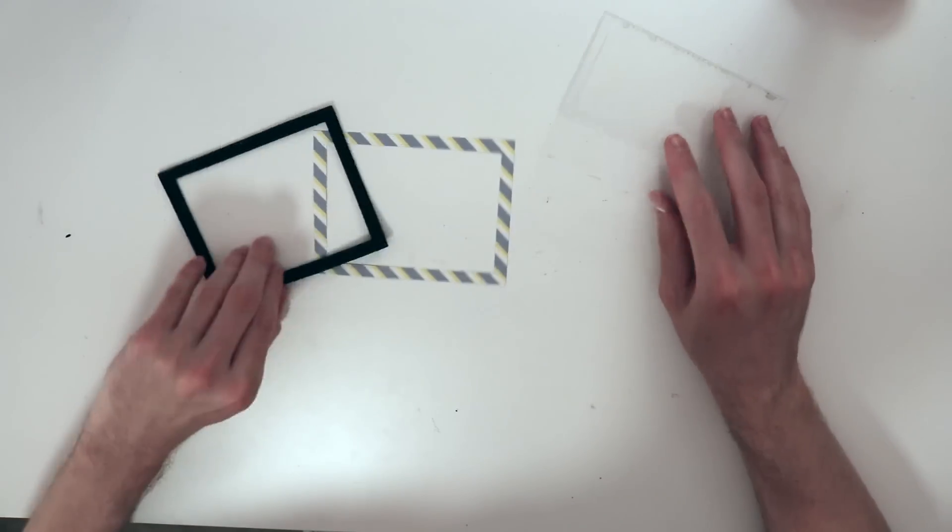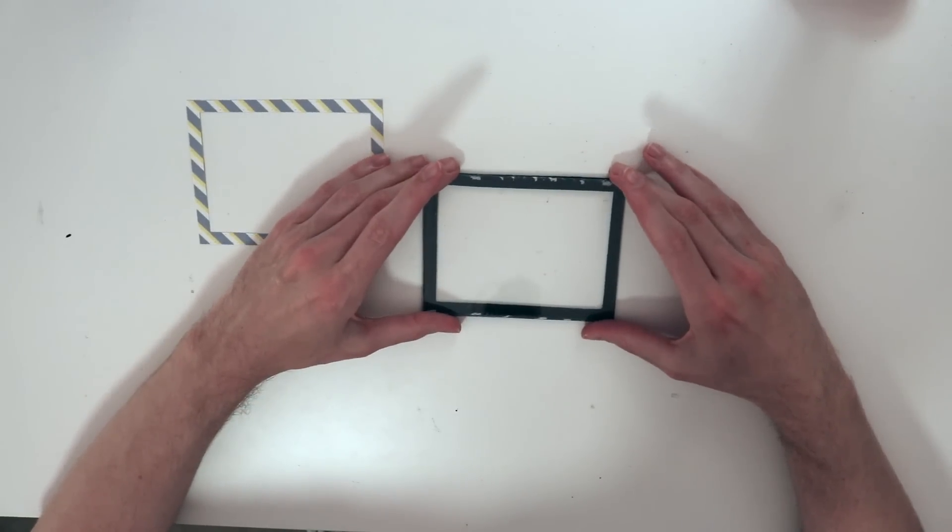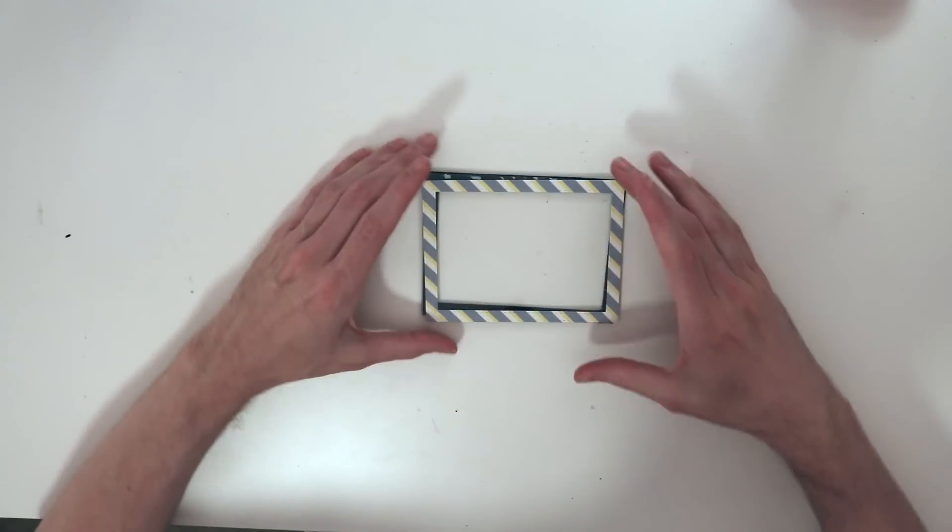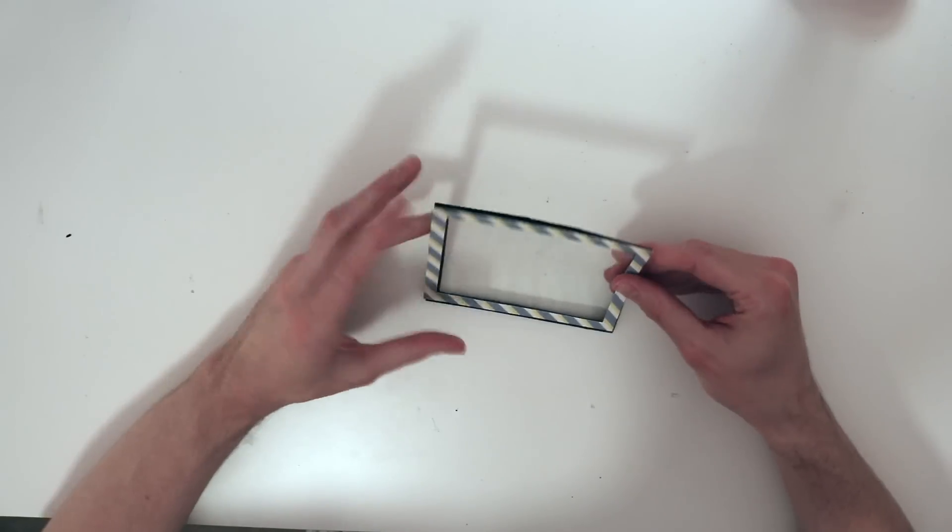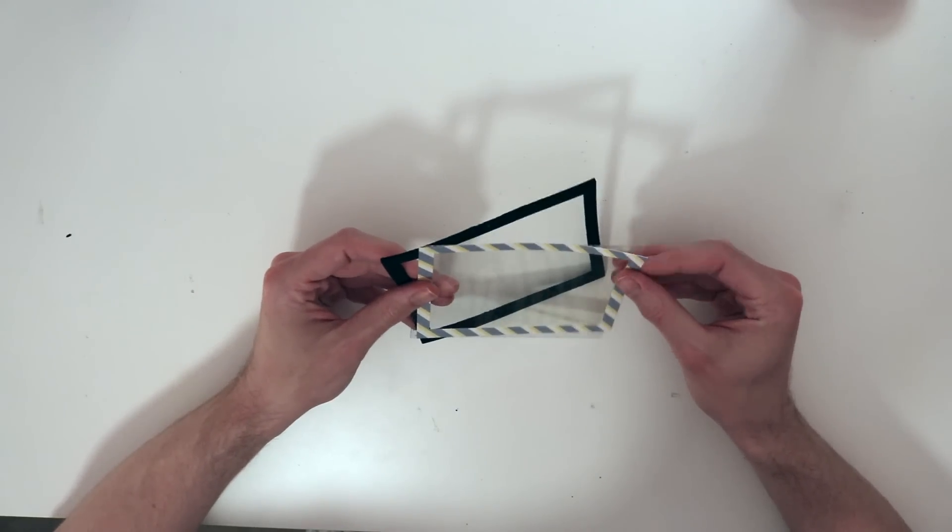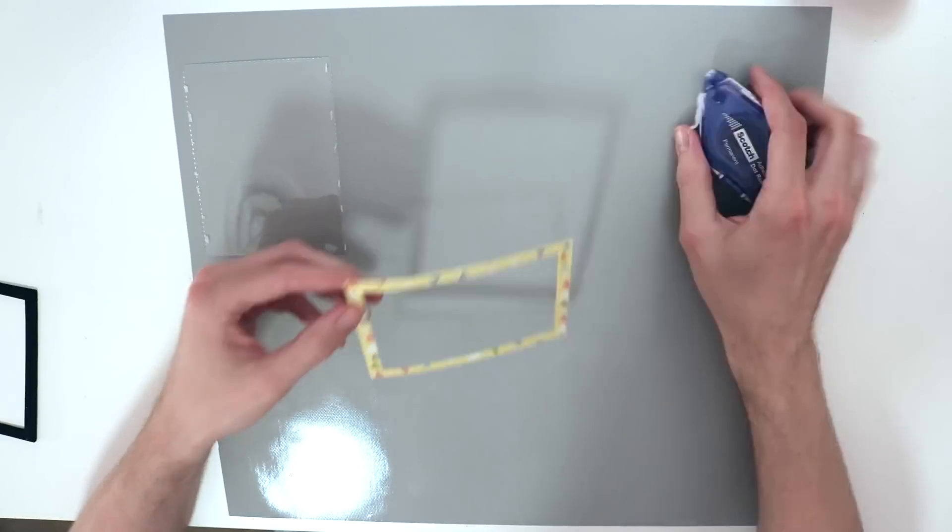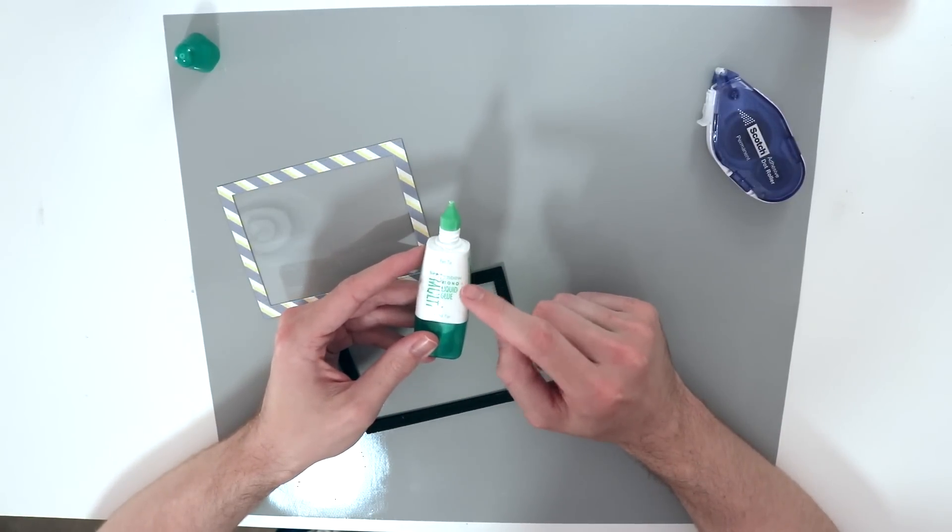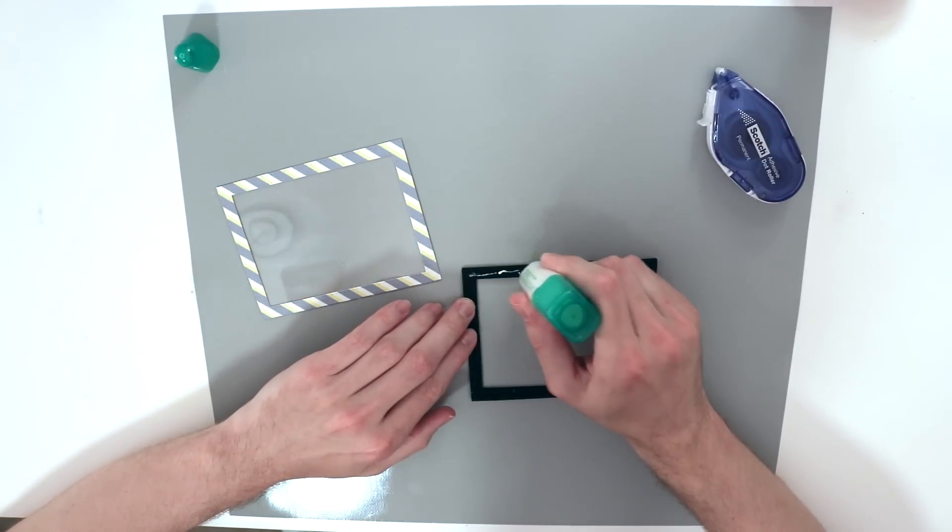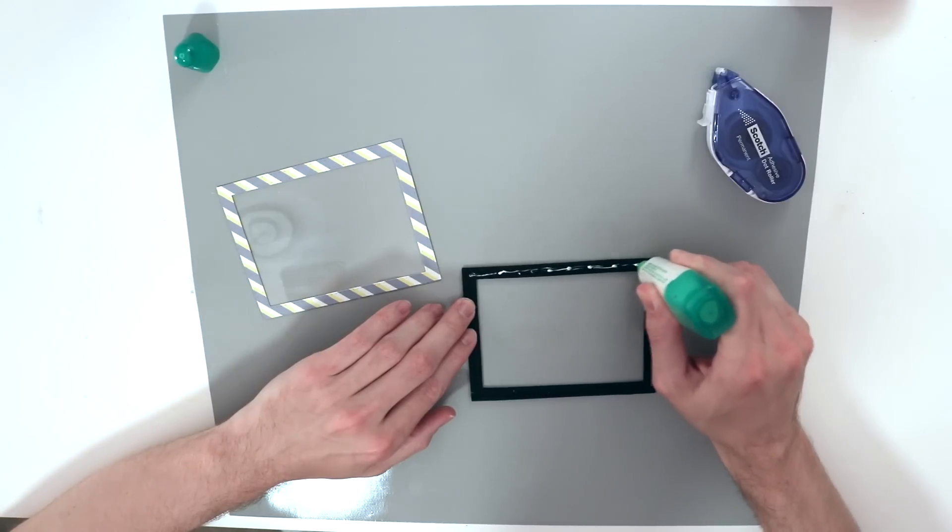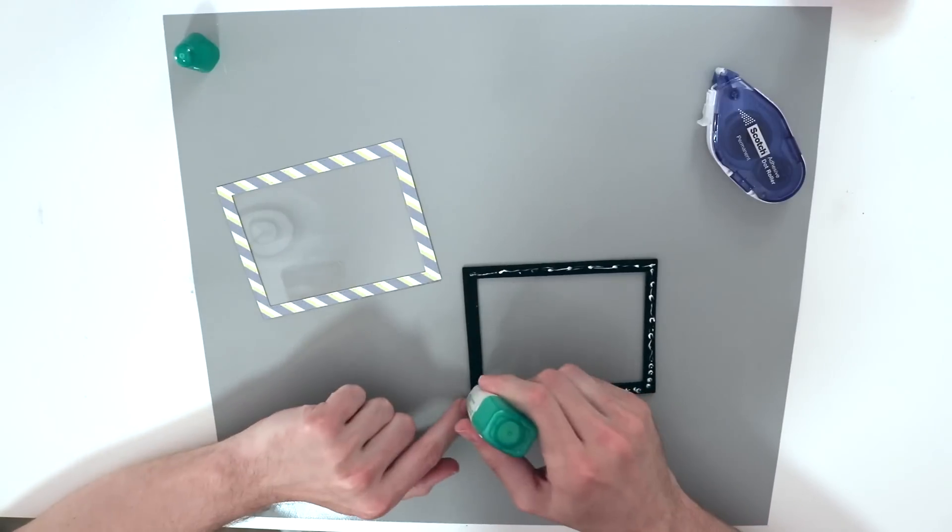So got the acetate cut out and my exacto knife keeps trying to fall apart. Now I have my three different pieces. Basically what's going to happen is I'm going to put this down on top of our foam piece and then this little border piece will help hide everything so it doesn't look ugly. I'm going to take some of the Tombow mono multi-liquid glue and apply it around the frame. I'm going to add just little bits of glue because I don't want it to splooge out on either side.